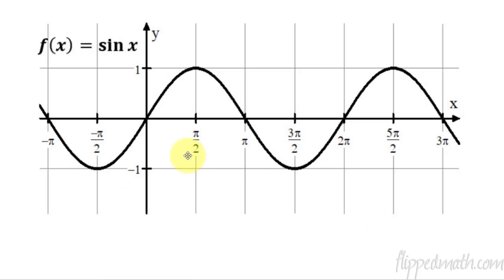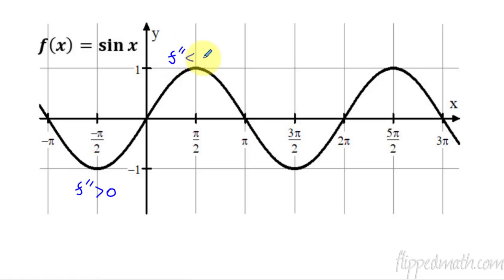So here's a basic parent function of a sinusoid — this is just sine x. What I wanted to do is write down very quickly when the graph is concave up. So it's right here, it's concave up, so I'm going to write that f second derivative is positive right here. And right here it's facing down, so the second derivative is less than zero. And then again here, second derivative has to be positive. And then here it's concave down, so the second derivative is less than zero.